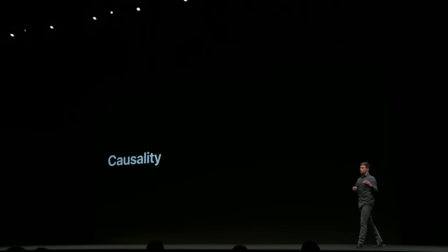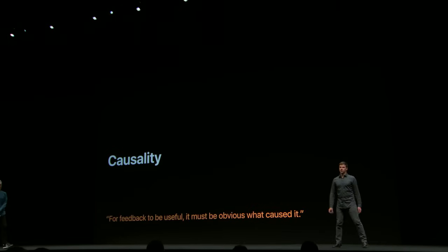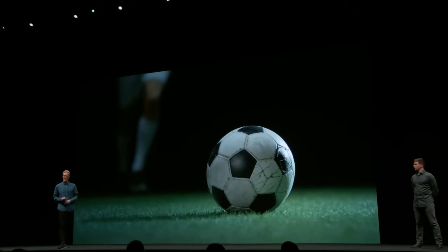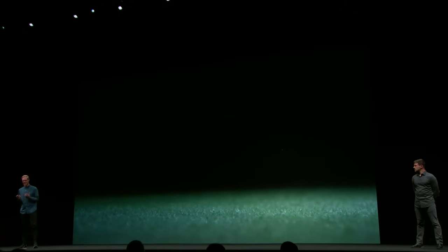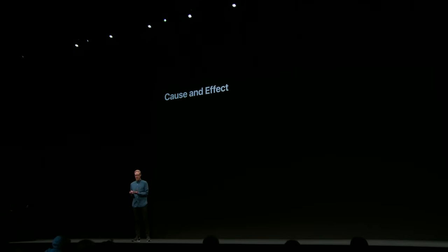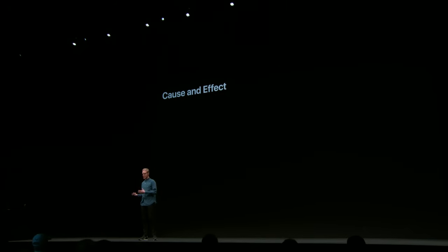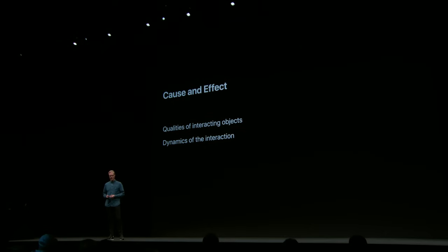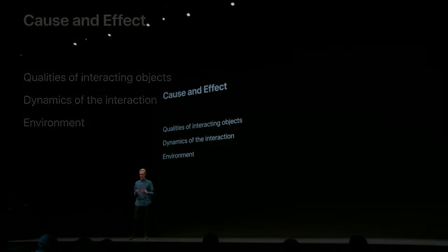Causality. Causality is about feedback being useful — it must be obvious what caused it. Imagine being a soccer player kicking a ball. There is a clear, obvious relationship between the cause — the foot colliding with the ball — and the effect, the sound and feel of the impact. What this experience sounds and feels like is determined by the qualities of the interacting objects, the material of the shoe, the material of the ball, the dynamics of the action, and the environment. Because we are so familiar with these things, it would not make sense to use a sound that is very different.